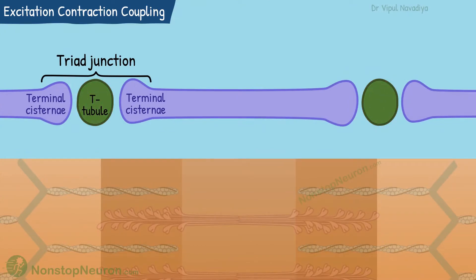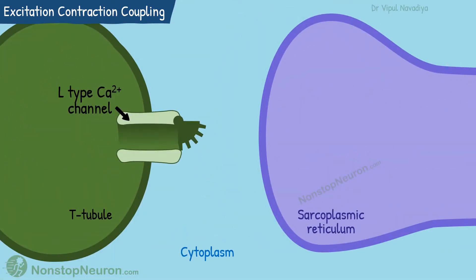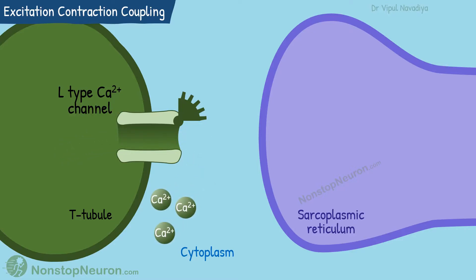The action potential passes through the T-tubules. Here we have L-type calcium channels on the membrane of T-tubules. The action potential causes them to open, which causes an influx of calcium from the T-tubules into the cell. The T-tubules are invaginations from the cell membrane, so the fluid inside is extracellular fluid and the calcium entering through these channels is extracellular calcium.